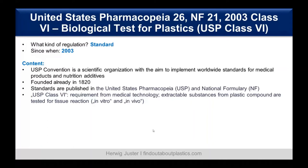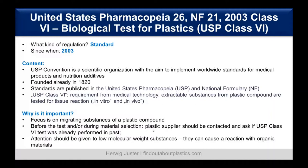USP Class VI is a general requirement from the medical technology industry. Its main mission is to check if the extractable substances from plastic compounds show some reaction on tissue — both in vitro in cell culture and in vivo on animals. Why is this important? It's about the migrating substances of a plastic compound: not so much the polymer itself, but more the additives, which can be extractable and can cause some tissue reaction.